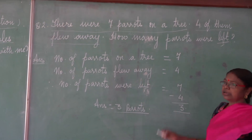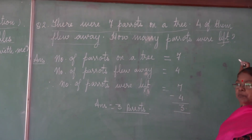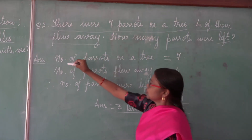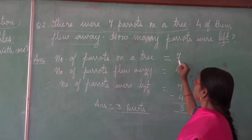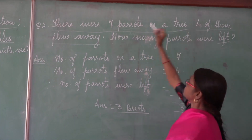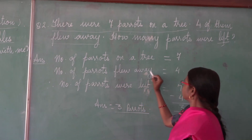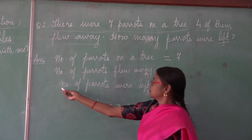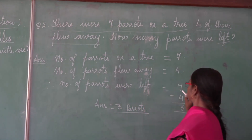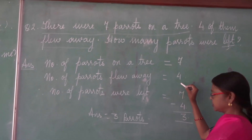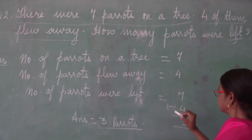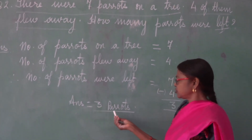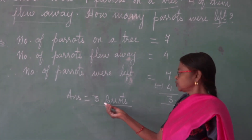Now, 'left' means what? As I told you earlier, left means you have to minus. So, now we make the statements. There are seven parrots on a tree — number of parrots on a tree equal to seven. The second statement: four of them flew away — number of parrots flew away is equal to four. The third statement: how many parrots were left? Therefore, number of parrots left is equal to seven minus four. Seven minus four is equal to three. So the answer you have to write is three. Three what? We are talking about parrots, so you need to write 'parrots.'